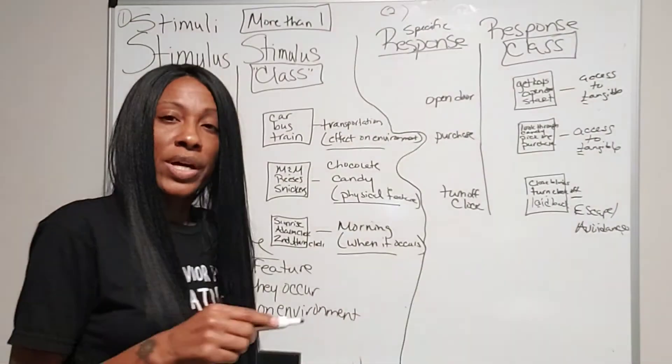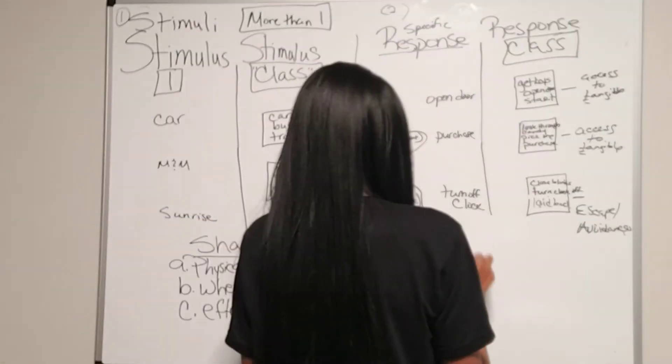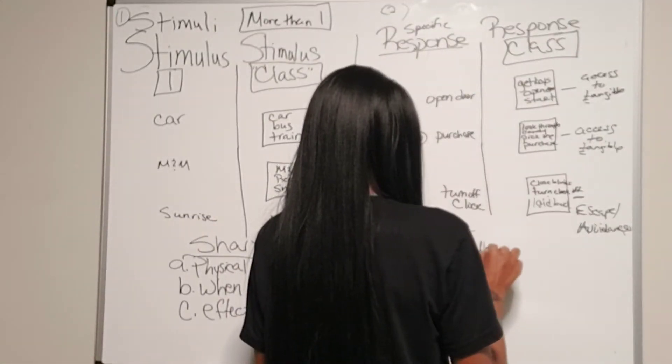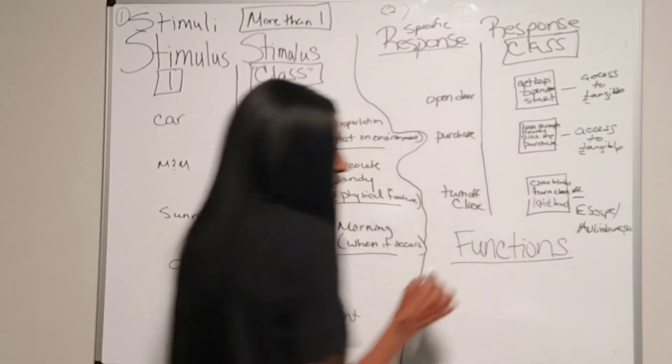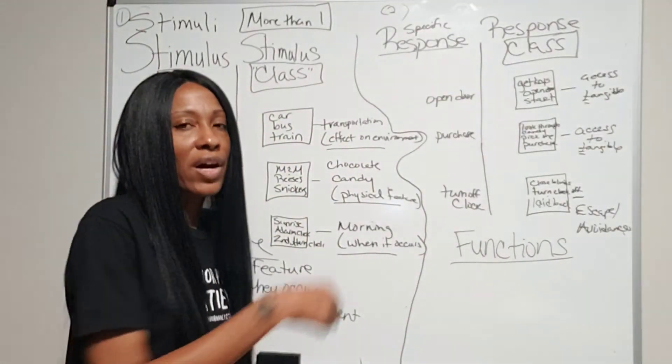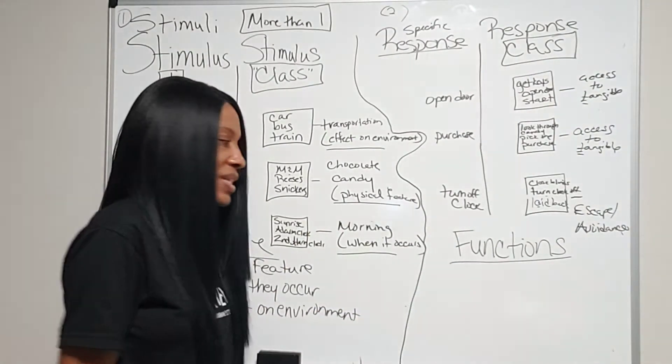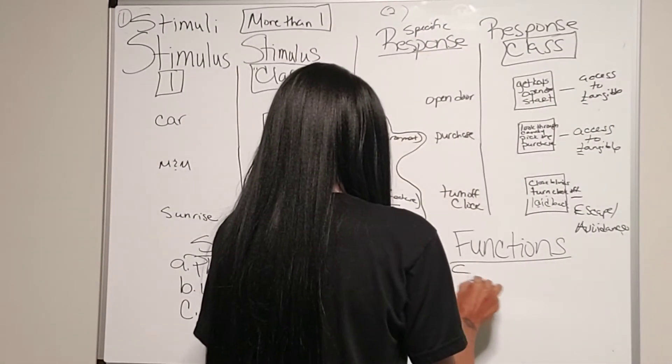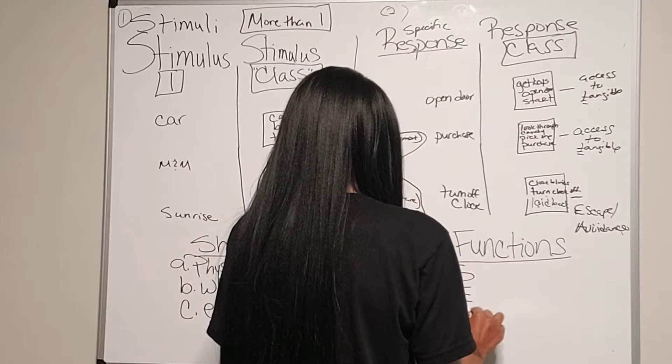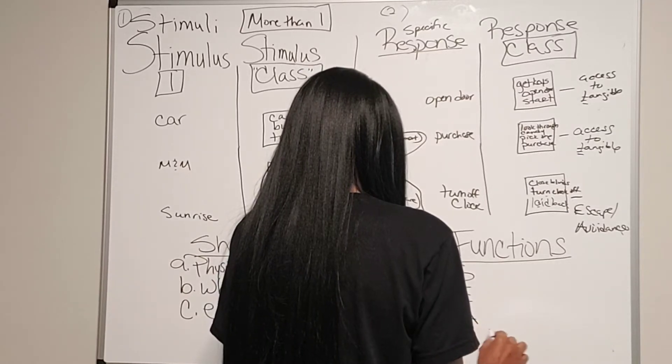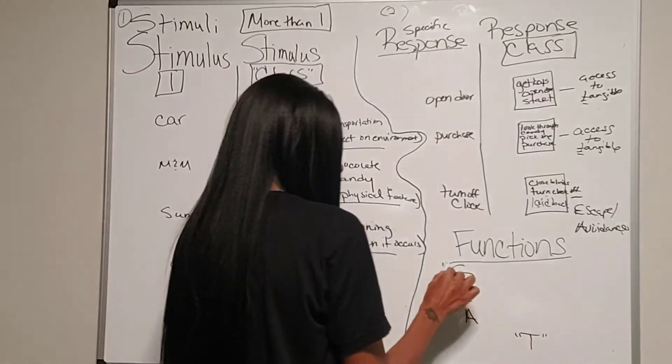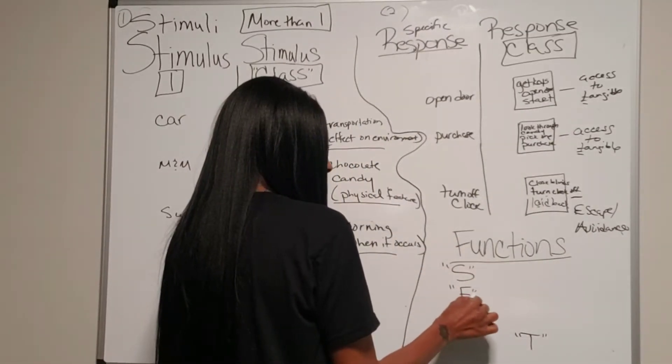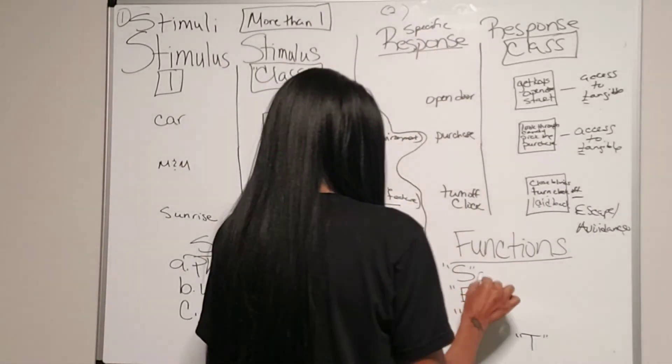So, real quick, I'm going to introduce you to some functions that we use in ABA. What we say is the majority of behaviors that occur can fall into one of these categories. So, the way I like to remember it, it's a cute little acronym. And the acronym is SEAT.